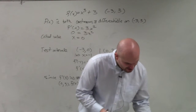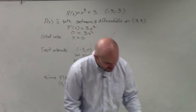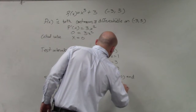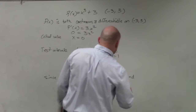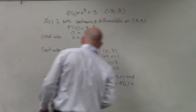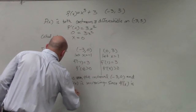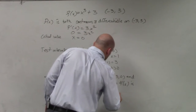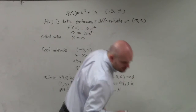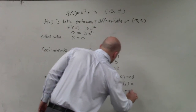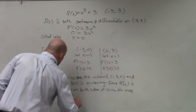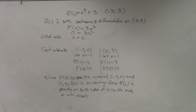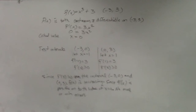And then we need to talk about our relative extrema. Since f prime of x is positive on both sides of x equals 0, no maximum or minimum occurs. Because for a max or min, we have to go from positive to negative or negative to positive.